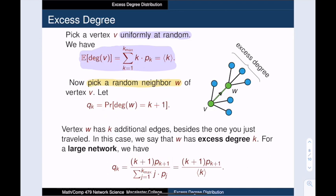The excess degree of the vertex w is the number of additional edges adjacent to w. In other words, we count all of the edges incident with w except for the one that we just traveled. So saying that w has excess degree k is the same thing as saying that w has total degree k plus 1.